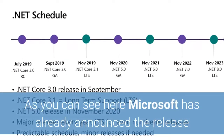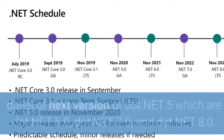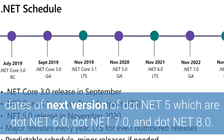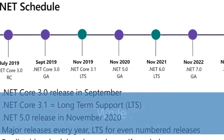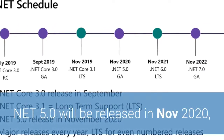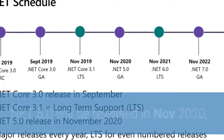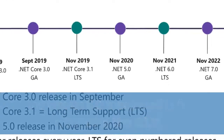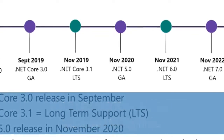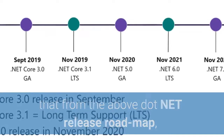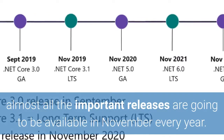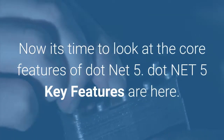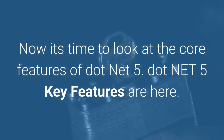As you can see, Microsoft has already announced the release dates of the next versions: .NET 6.0, .NET 7.0, and .NET 8.0. While .NET 5.0 will be released in November 2020, version 8.0 is expected to be released in November 2023. From the .NET release roadmap, almost all important releases are going to be available in November every year. Now let's look at the core features of .NET 5.